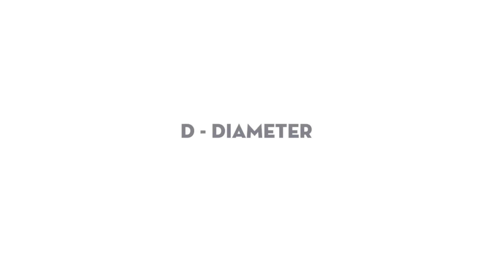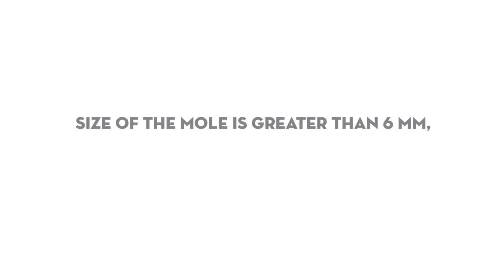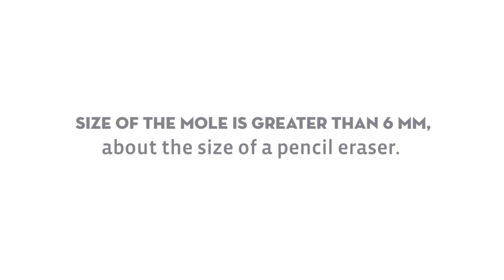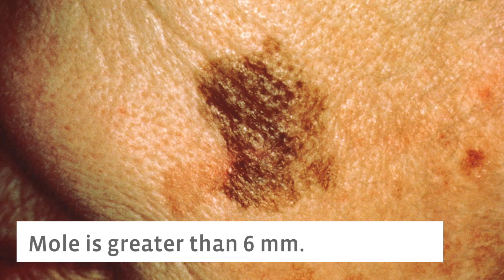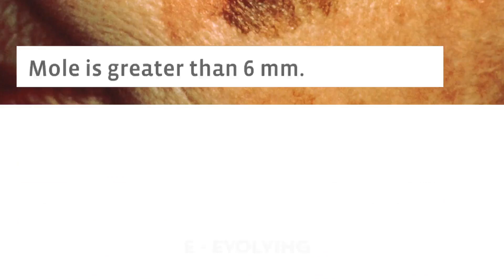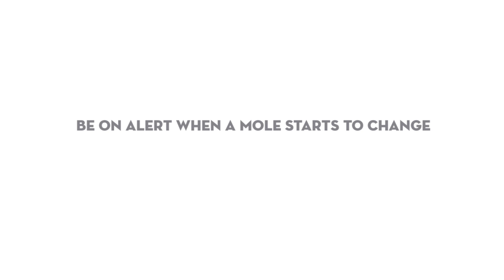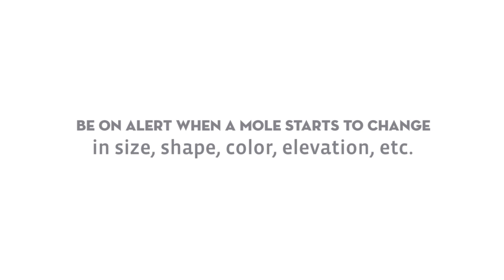D is diameter — any mole greater than roughly a pencil eraser diameter. This is probably the least helpful because melanomas can be smaller and very benign skin lesions can be larger. E is one of the most important, and that's any mole that's evolving. Anything you see changing — if it changes color, changes size, or starts to raise up — that absolutely should be evaluated. We also worry about moles that itch, bleed, or look like a sore that doesn't heal; those 100% need to be evaluated.